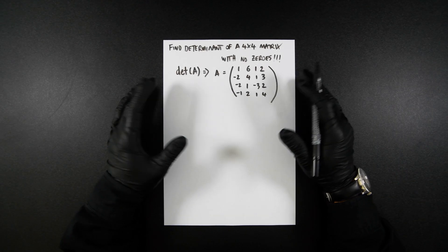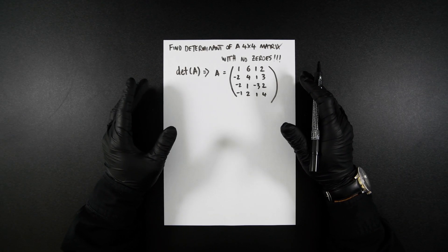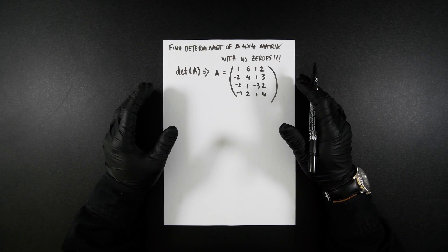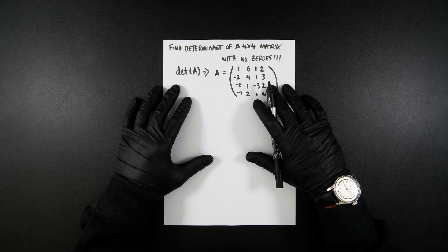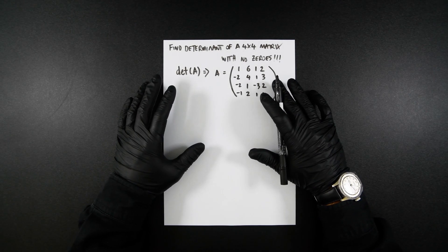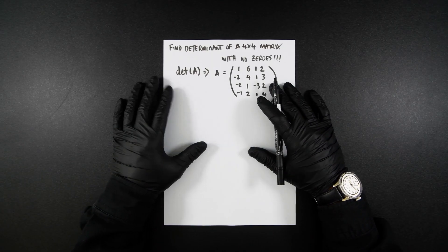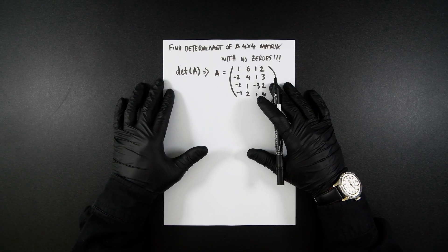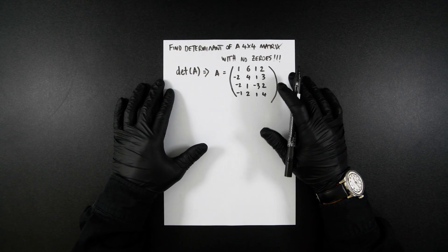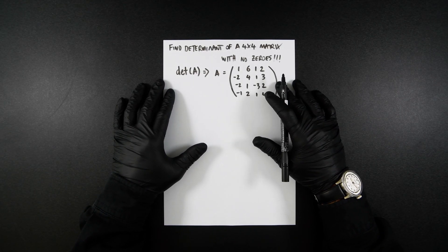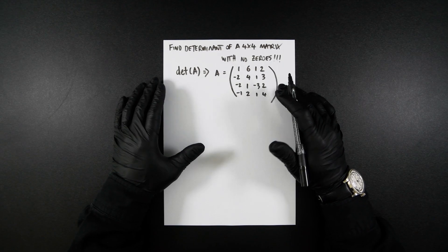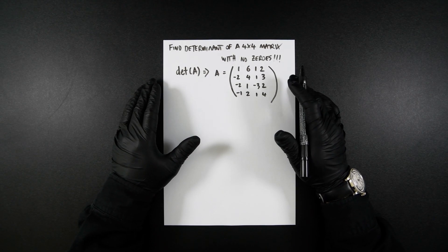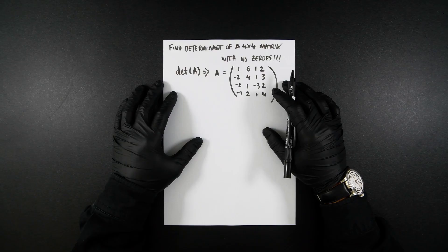If you haven't already, please watch my other videos on finding the determinant of a two by two matrix or a three by three matrix. You need to know how to do both of those to deal with a four by four matrix. Most people also know how to solve this, but when there are no zeros or easy column to pick, it can be quite complicated.